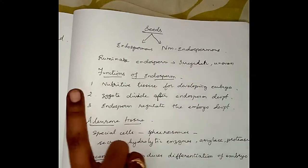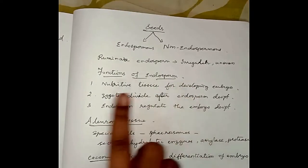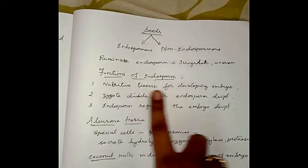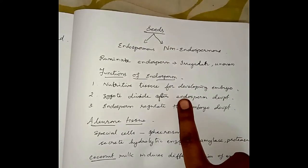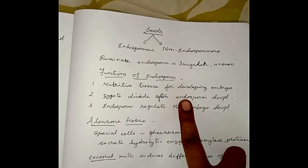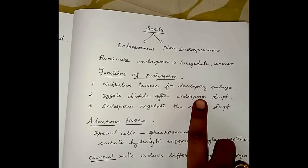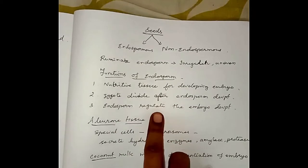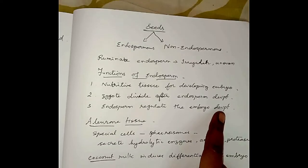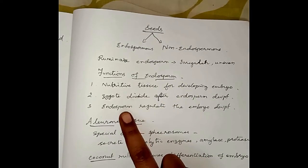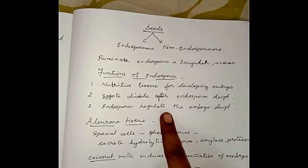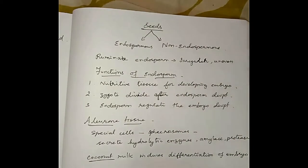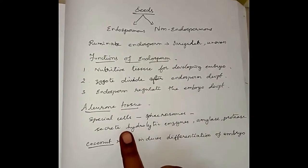The functions of endosperm are: first, it becomes the nutritive tissue for the developing embryo. Second, endosperm develops before the zygote to provide early nutrition for the developing embryo. Third, the endosperm regulates embryo development — based on the amount and type of endosperm present, embryo development proceeds. Aleurone tissue is a connective tissue made up of highly specialized cells present as one or a few layers.